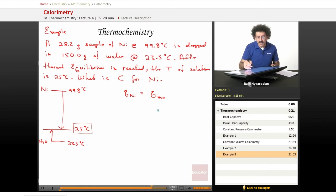I'm going to run this calculation one way, and then I'm going to do something slightly different. At the end, I'm going to talk about this little negative sign that's going to show up out of nowhere. So Q of nickel is MC delta T. And Q of H2O is MC delta T.